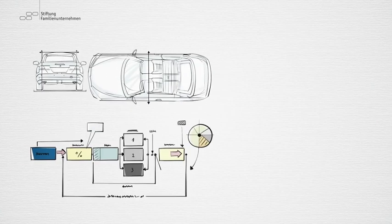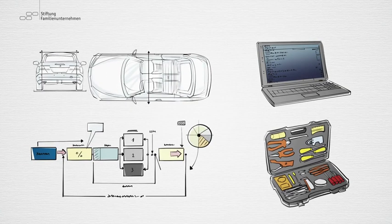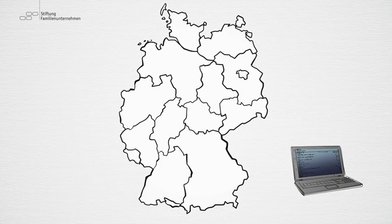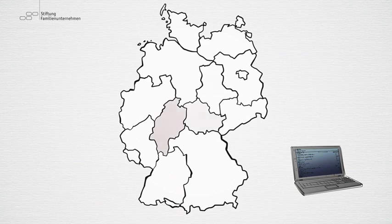It examines four occupational groups that play a key role in digitalization and identifies areas where skilled workers are needed in Germany and locations where they are abundant. There are shortages in all four groups among university graduates as well as trainees.